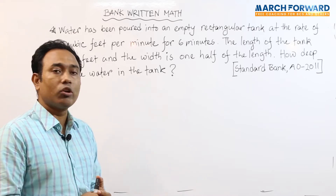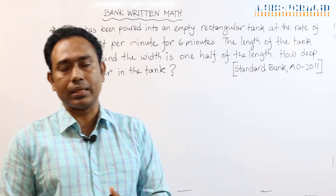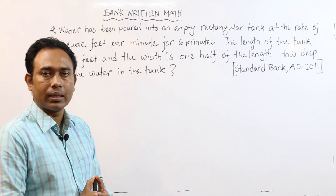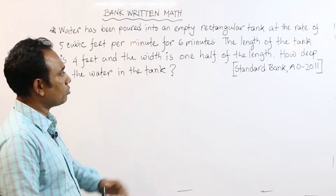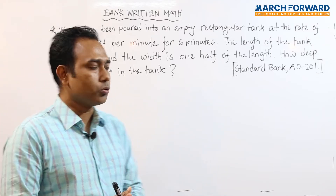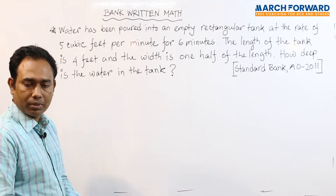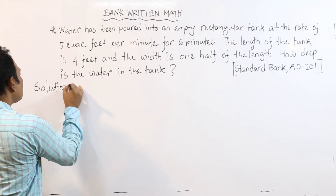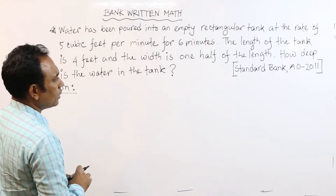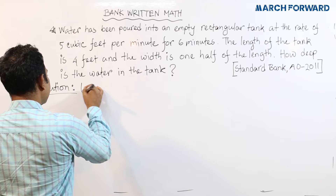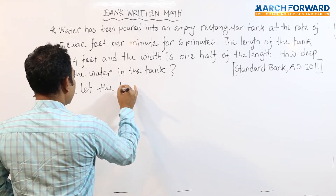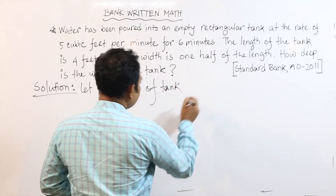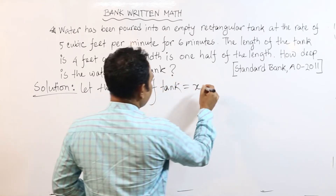The total amount of water, which equals the volume filled in the tank, is what we need to calculate. Let the depth of the rectangular tank equal x feet.